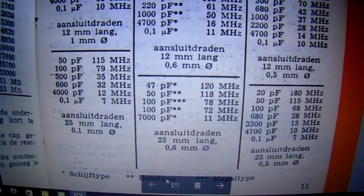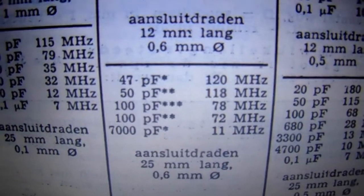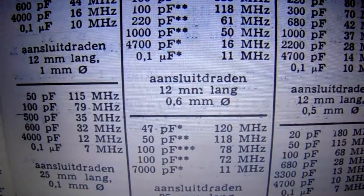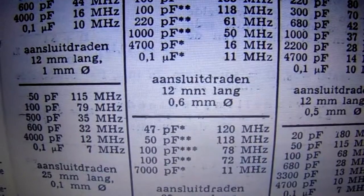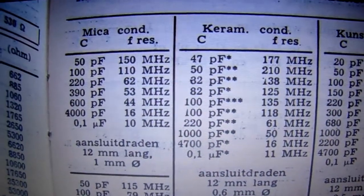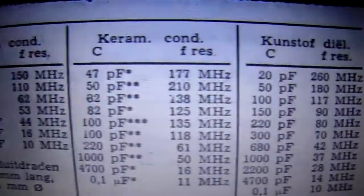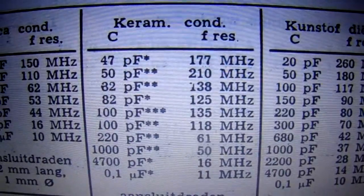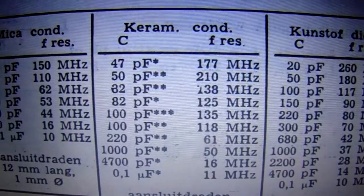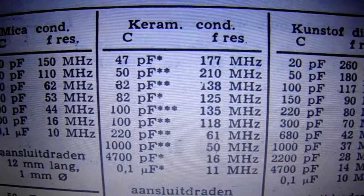All capacitors, all kinds of capacitors have specific resonant frequencies, and also the length of the wires plays a role when you want to test that property, the resonant frequency. So ceramic capacitors 47 picofarad is 177 megahertz, 50 picofarad is 210 megahertz, etcetera.